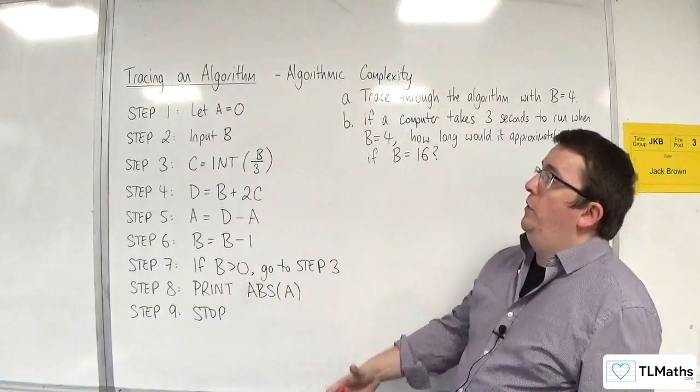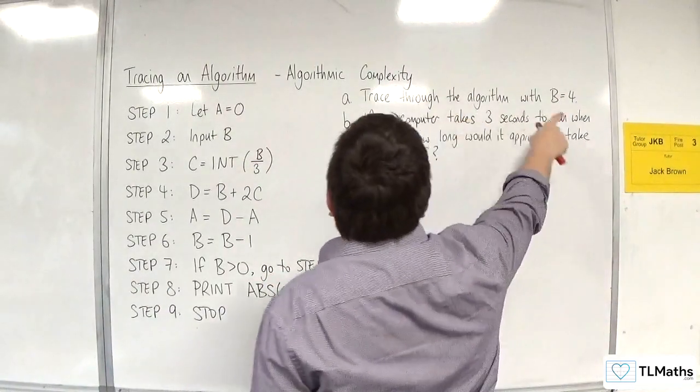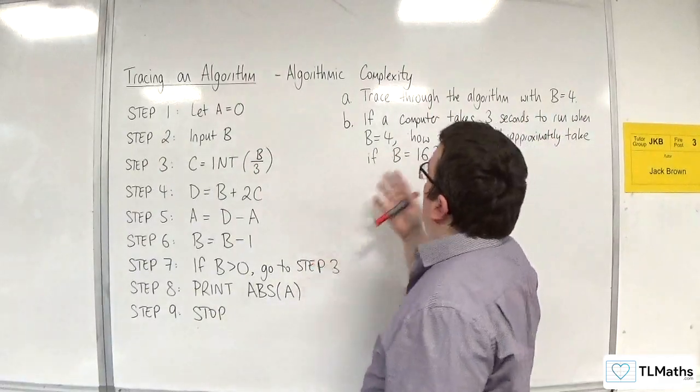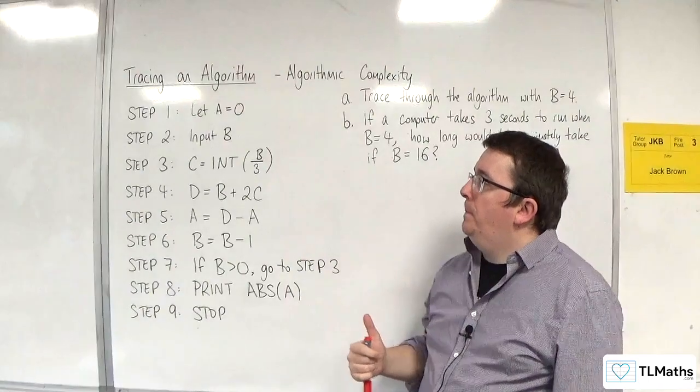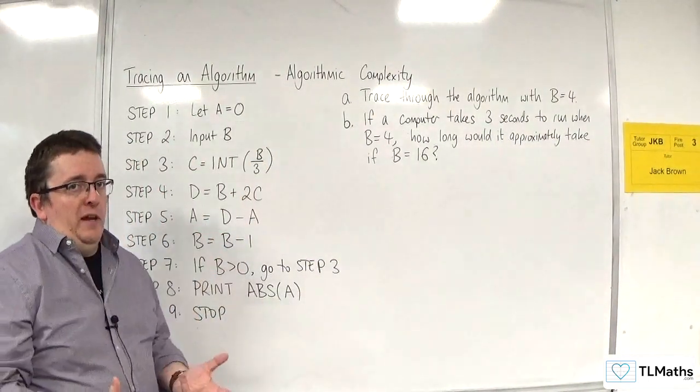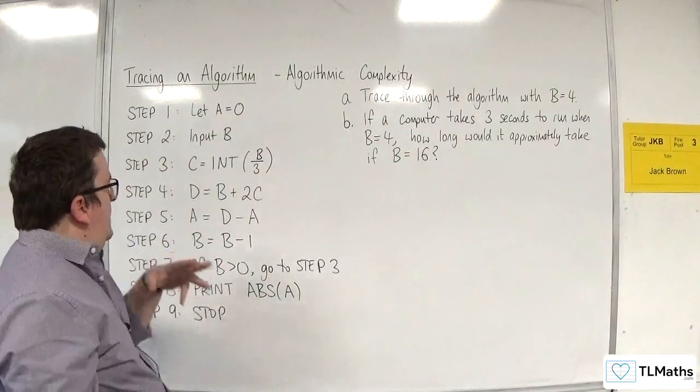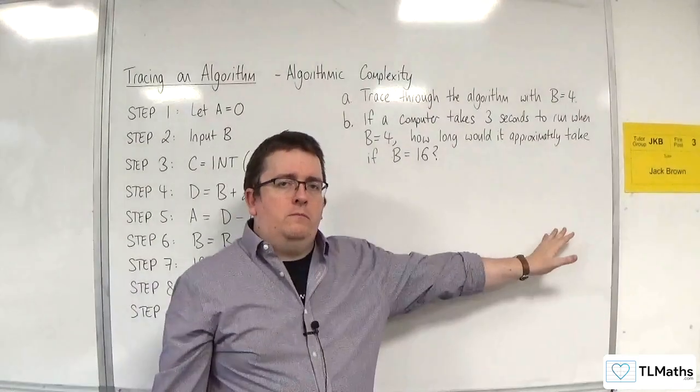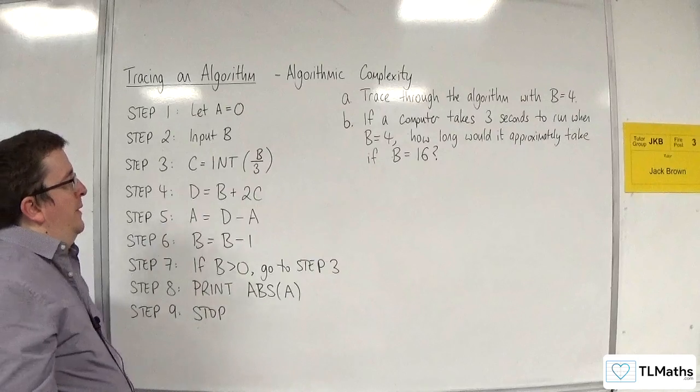In this video, we're going to run through this algorithm. We're going to use b equals 4, and then we're going to answer a question on complexity for part b. So, I'm going to need a trace table. I know with the number of steps that this is going to take, I'm actually going to do this going horizontally because I might have a little bit more space to do that in.